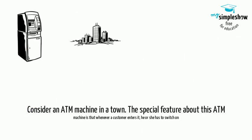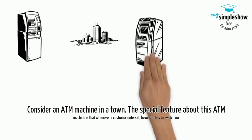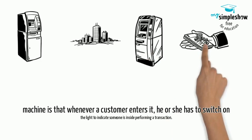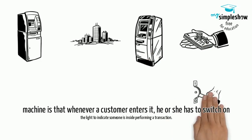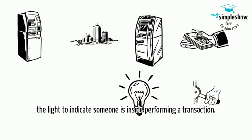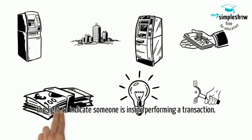Consider an ATM machine in a town. The special feature about this ATM machine is that whenever a customer enters it, he or she has to switch on the light to indicate someone is inside performing a transaction.